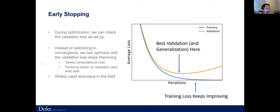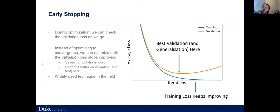How do you know how big to make the train, validation, and test sets? There's not a strict rule of thumb — it depends on the size of your dataset. Most people use a larger proportion of data for training and relatively equal amounts for validation and test. Typical examples are 50% for training with 25% and 25% for validation and test, or 60/20/20, or 70/15/15. The guideline is a larger proportion for training and more or less equal amounts for validation and test.